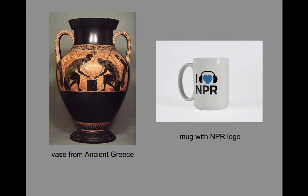And a fourth pair: on the left, a vase from ancient Greece — is that art? And on the right, a mug with an NPR logo — is that art? Pause if you need to solidify your thoughts on each of these, and have some specific reasons why things do or do not qualify as art in your understanding. Then we'll walk through them together.